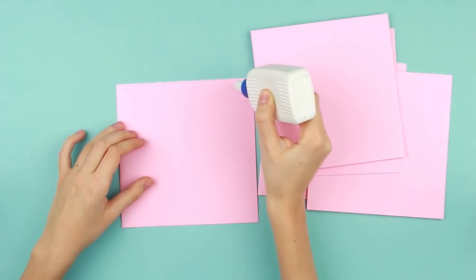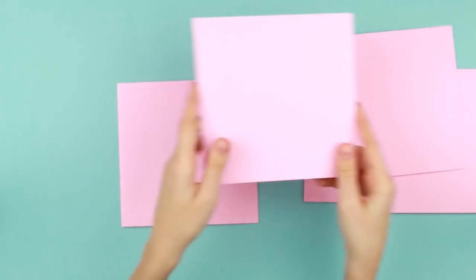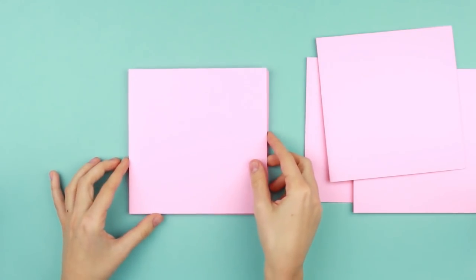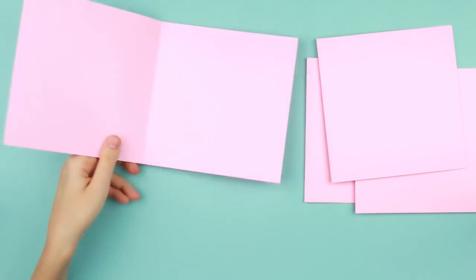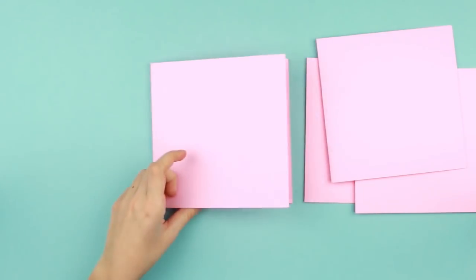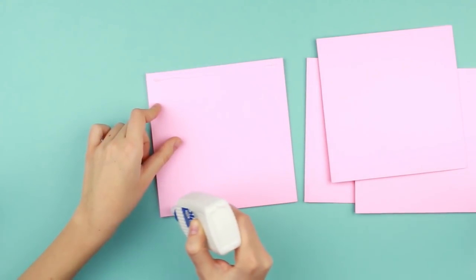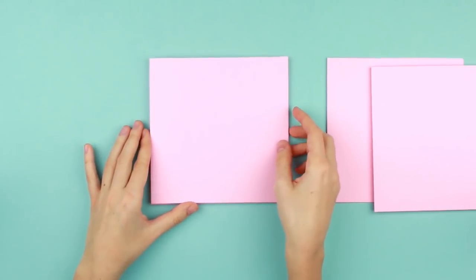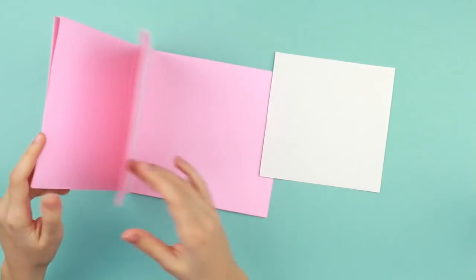Add white glue to the upper side of the cardstock. Attach another sheet on top. Keep in mind that the scrapbook opens from the right side. Add some glue again, repeating the steps. Make as many pages as you wish. The inner part of the scrapbook is ready.